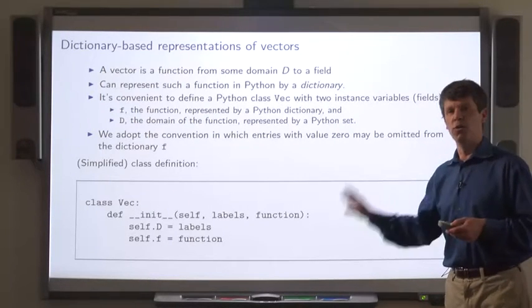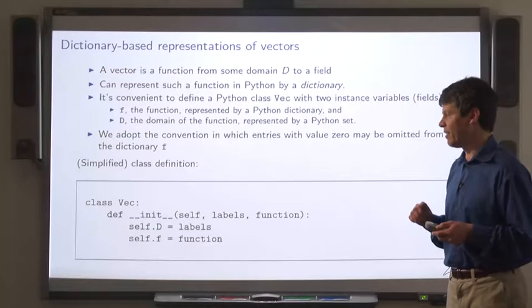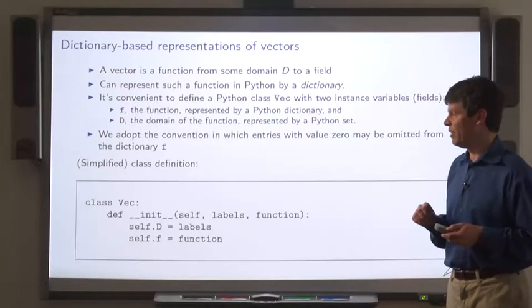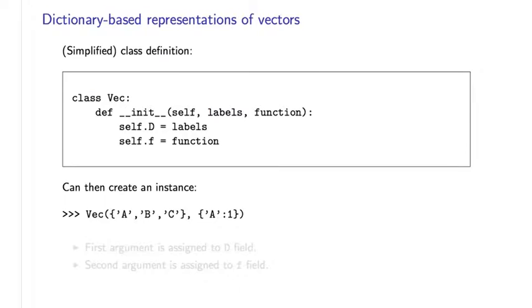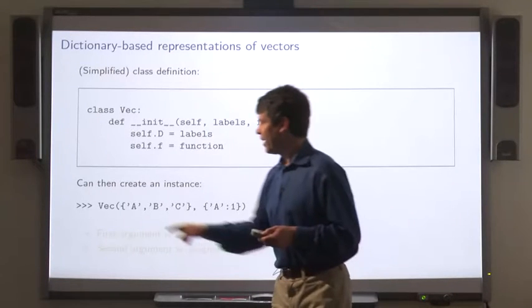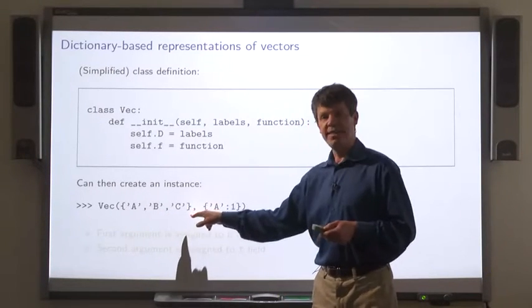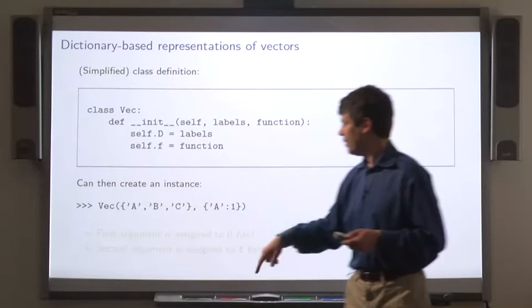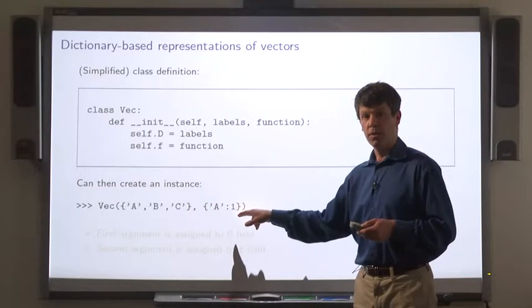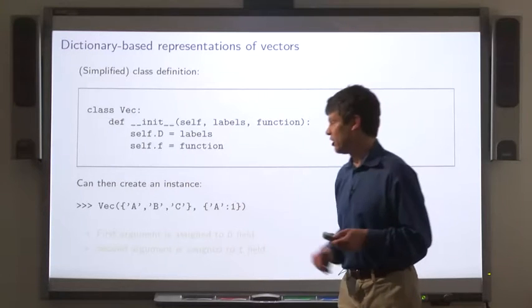So here's a kind of bare bones definition of a class that has these two fields. We can use this to create an instance by supplying two arguments, the set, the domain D, and the function, F, represented as a dictionary.